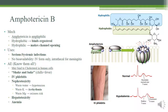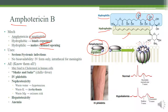Amphotericin has two segments — hydrophobic and hydrophilic — hence the 'ampho' prefix, like an amphibian or amphiphilic molecule. The hydrophobic region has few hydroxyl groups; the hydrophilic region has many, attracting water. The hydrophobic group binds onto ergosterol inside the fungal cell membrane. Multiple amphotericin molecules then bunch up, forming their own channels that release the contents of the fungi, killing it.